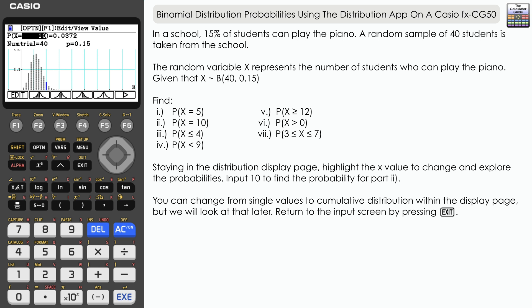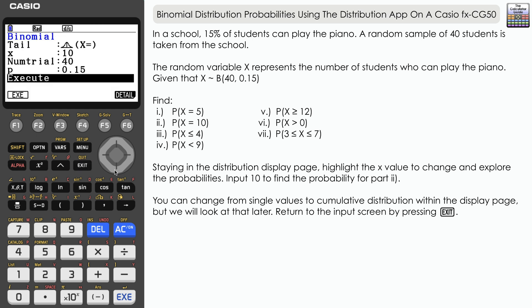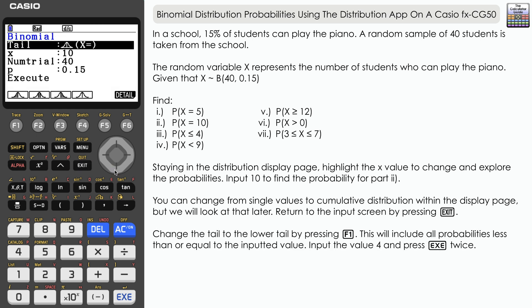Just in case you wanted to do a cumulative probability from the very beginning, so exit and then we'll navigate back up to tail. Now our next probability is the probability X is less than or equal to 4. So less than or equal to, well that is F1 from the options here. We can see that that is a lower tail.